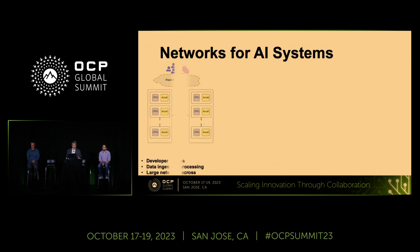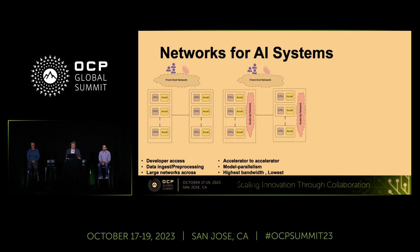Looking at the network side: traditional network architecture has top-of-rack switches and a whole hierarchy above, which is the front-end network where developers have access. This is where if you're training a model, you get data ingested from storage, do pre-processing, and provide it to GPUs and accelerators. What's changing is that as we look at scale-up systems needing higher bandwidth and lower latency, GPUs will get connected with much higher bandwidth connections — what we call the scale-up network, which behaves almost like a single-system view across multiple GPU infrastructure.